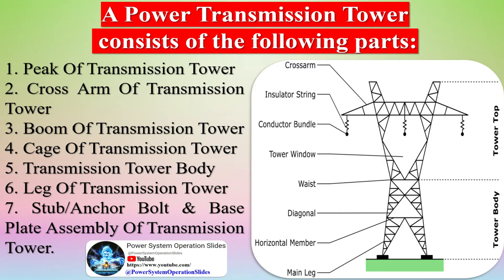A power transmission tower consists of the following parts: peak of transmission tower, crossarm, boom, cage of transmission tower, transmission tower body, leg of transmission tower, and stub anchor bolt and base plate assembly of transmission tower.